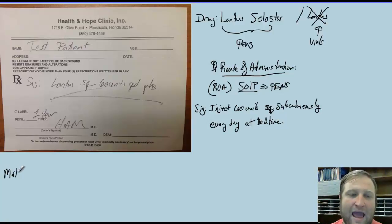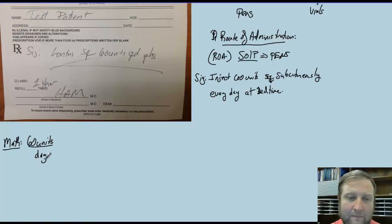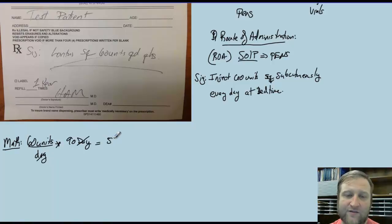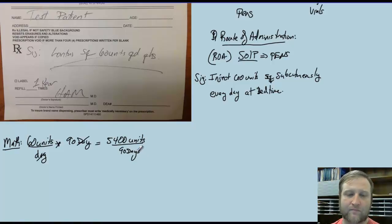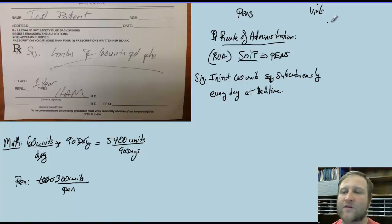Now we calculate how many pens we need. The patient takes 60 units every day. Dosing for a 90-day period: 9 × 6 = 54, add two zeros — 5,400 units per 90 days. Every pen has 300 units (3 mLs × 100 units/mL). So we divide 5,400 units ÷ 300 units per pen.